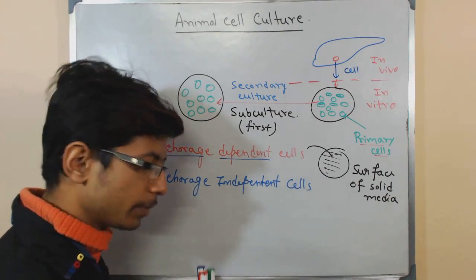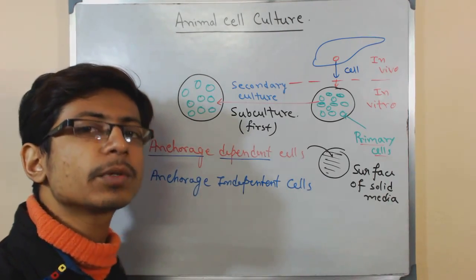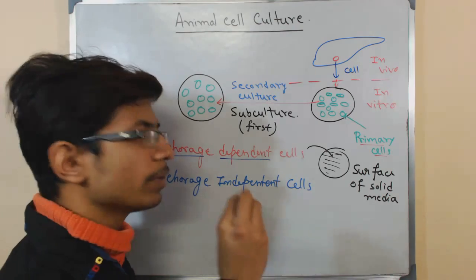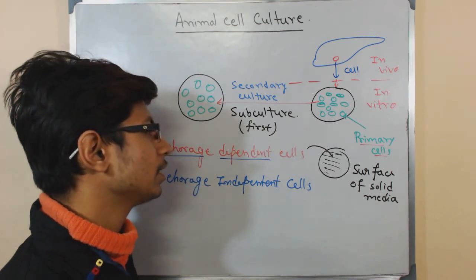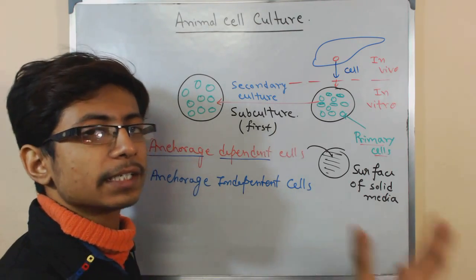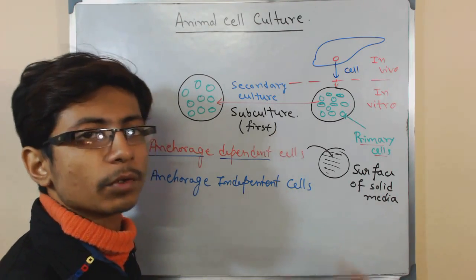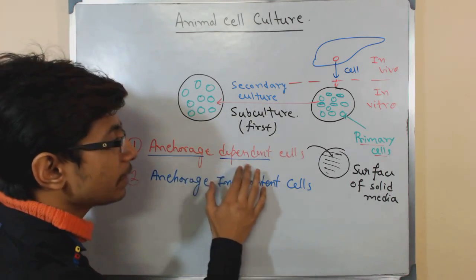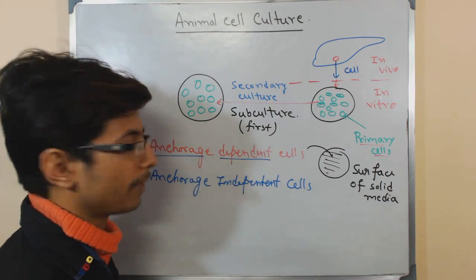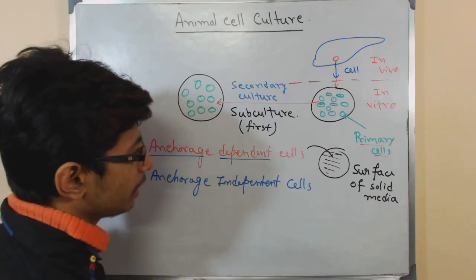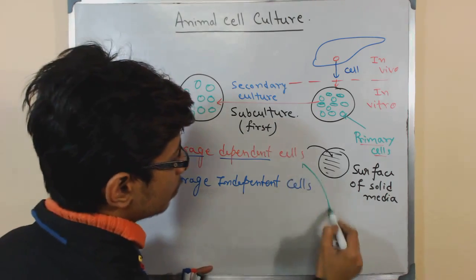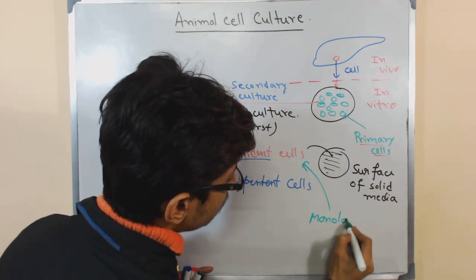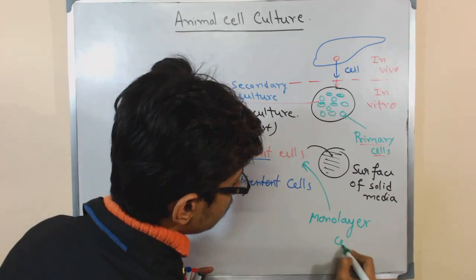For those cells, we require solid tissue culture media, so we need to add a solidifying agent so that they will grow onto the surface, get the oxygen, and grow firmly. They are also termed as anchorage dependent monolayer cells.